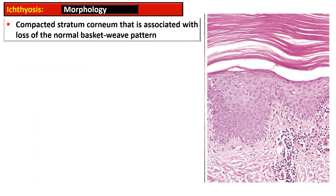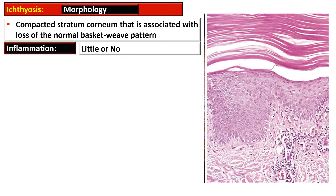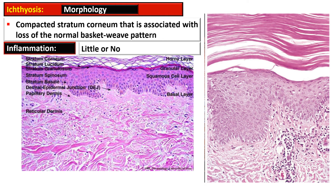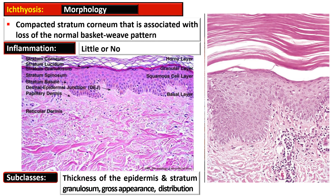This photomicrograph shows that the upper stratum corneum layer is compact and the normal basket weave appearance is lost, with little or no inflammation present. The normal skin picture is shown for comparison, illustrating the normal basket weave appearance of the stratum corneum, which is lost in ichthyosis. The types of ichthyosis differ based on thickness of the epidermis and stratum granulosum, gross appearance, or distribution of the disease.